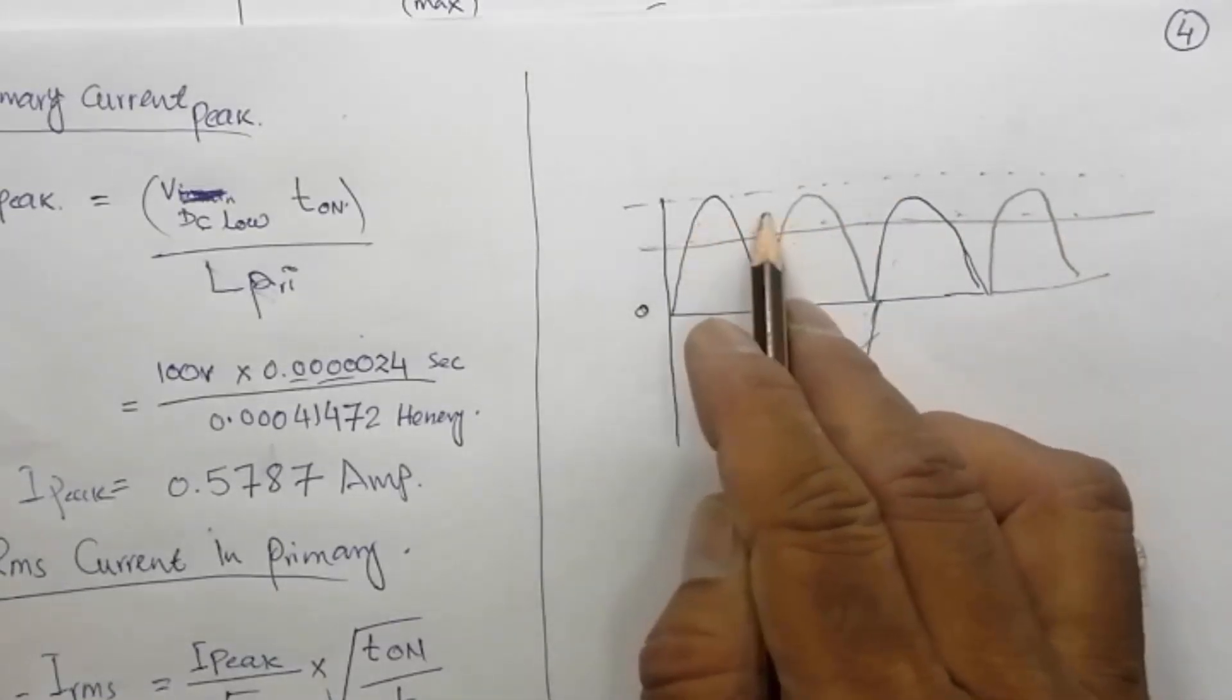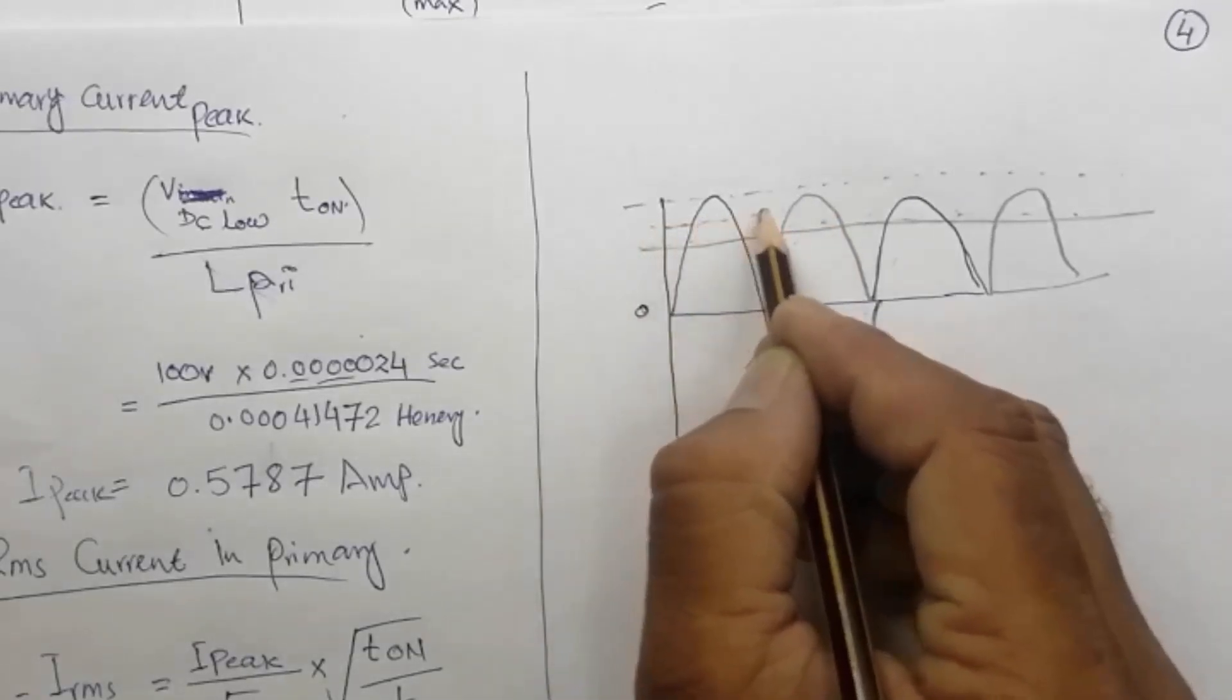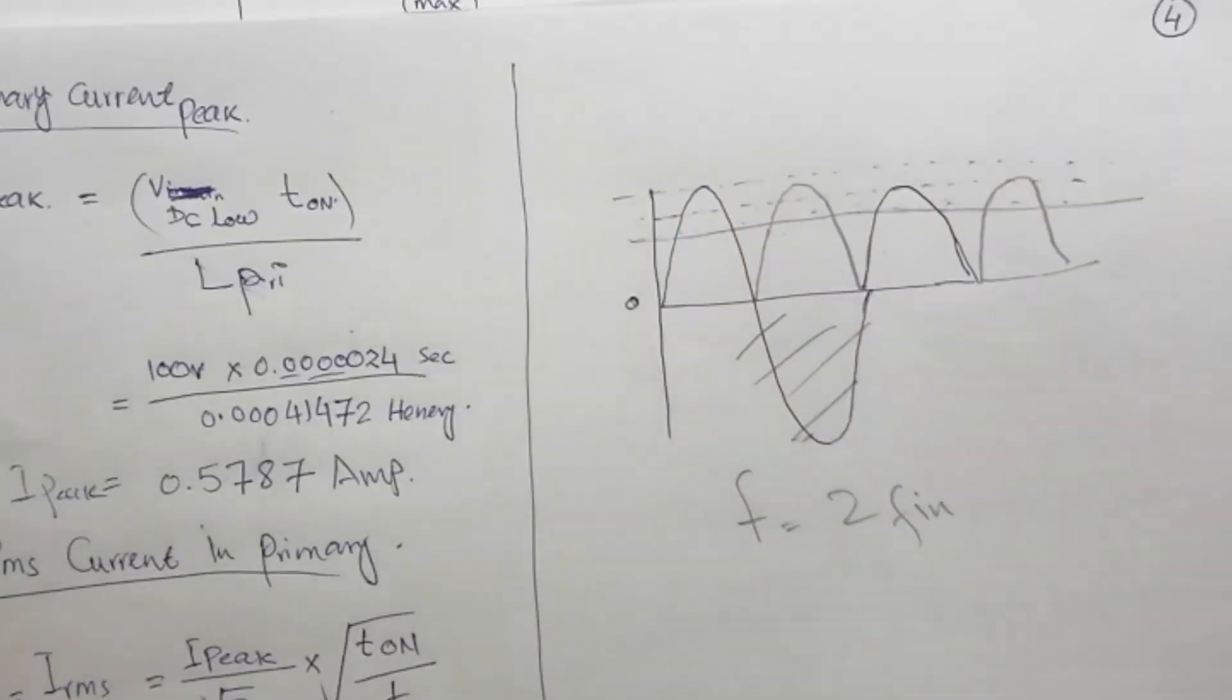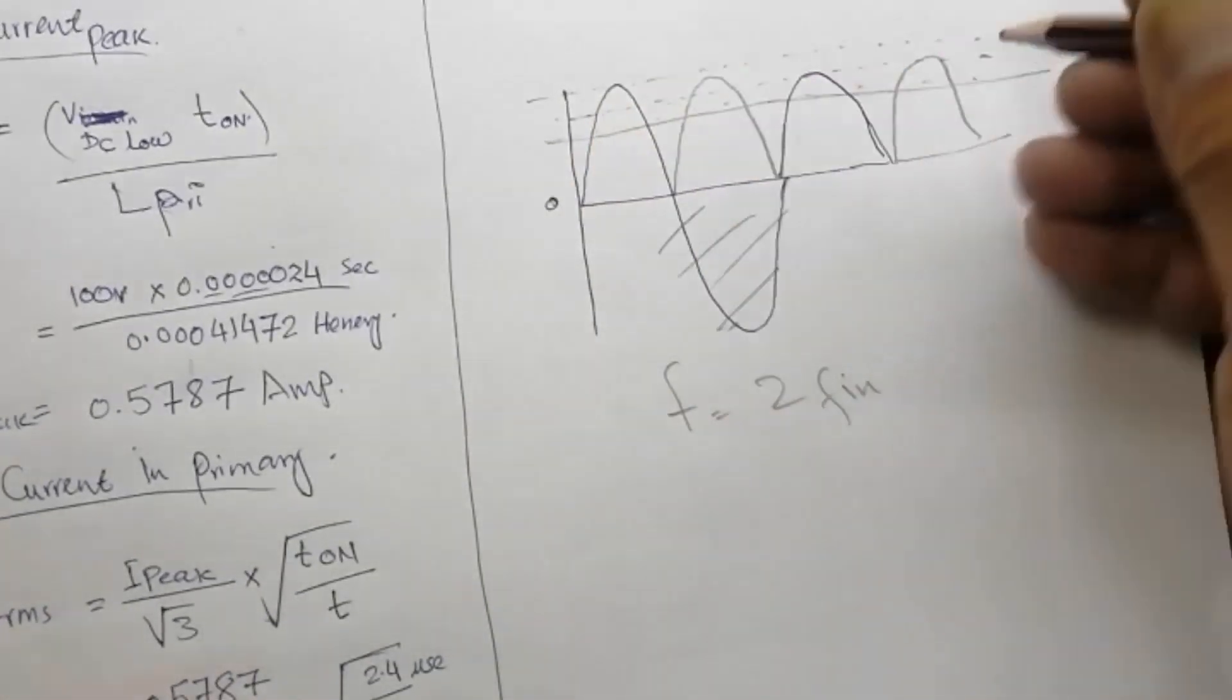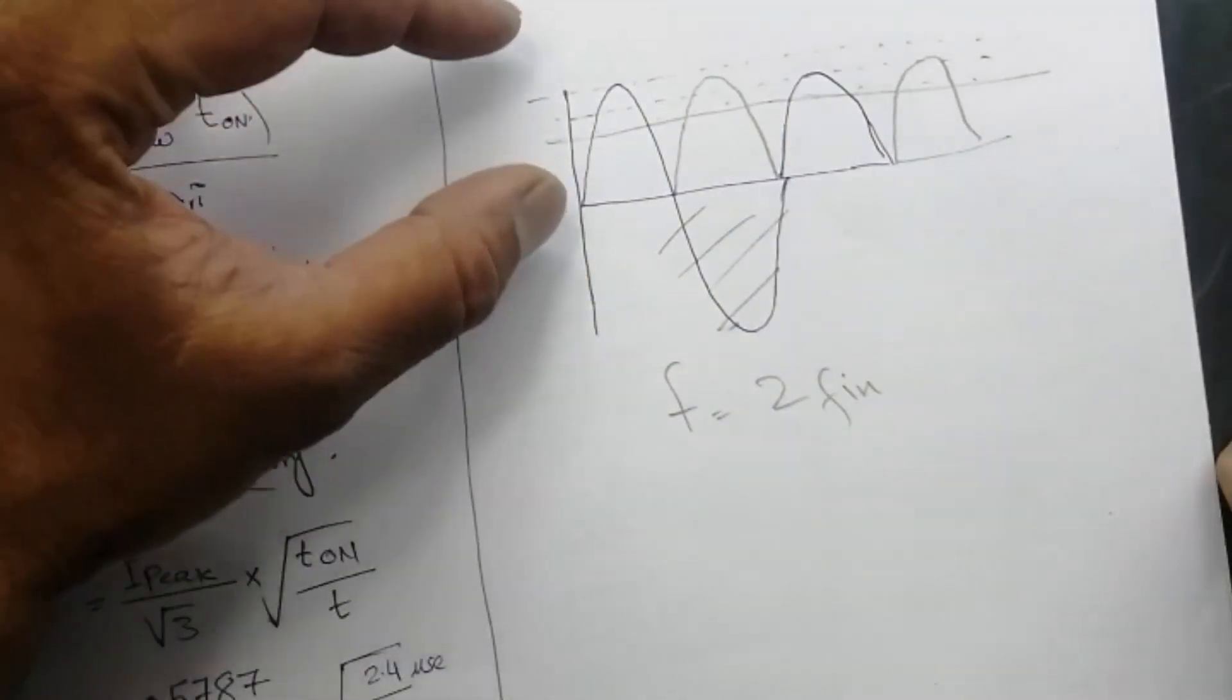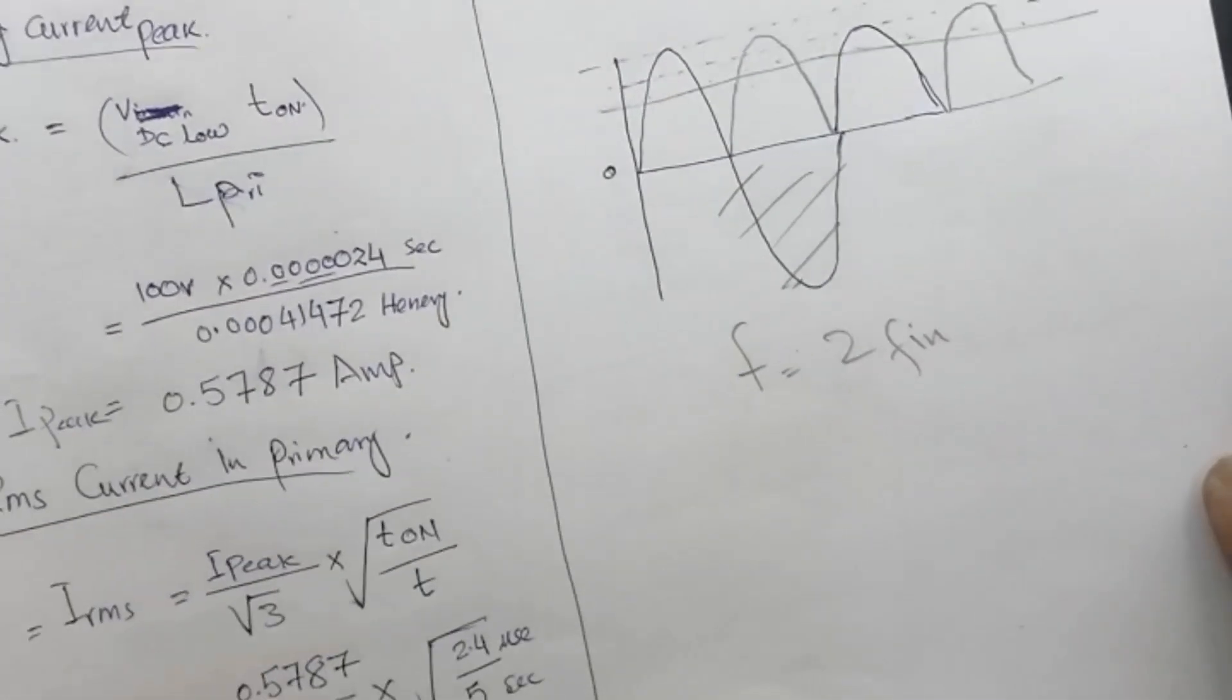From here to here, this is usable voltage. We have to remove these ripples by using a capacitor, so we take a midpoint, a center point. In normal routine calculations, this level is calculated as ten percent of the total peak.